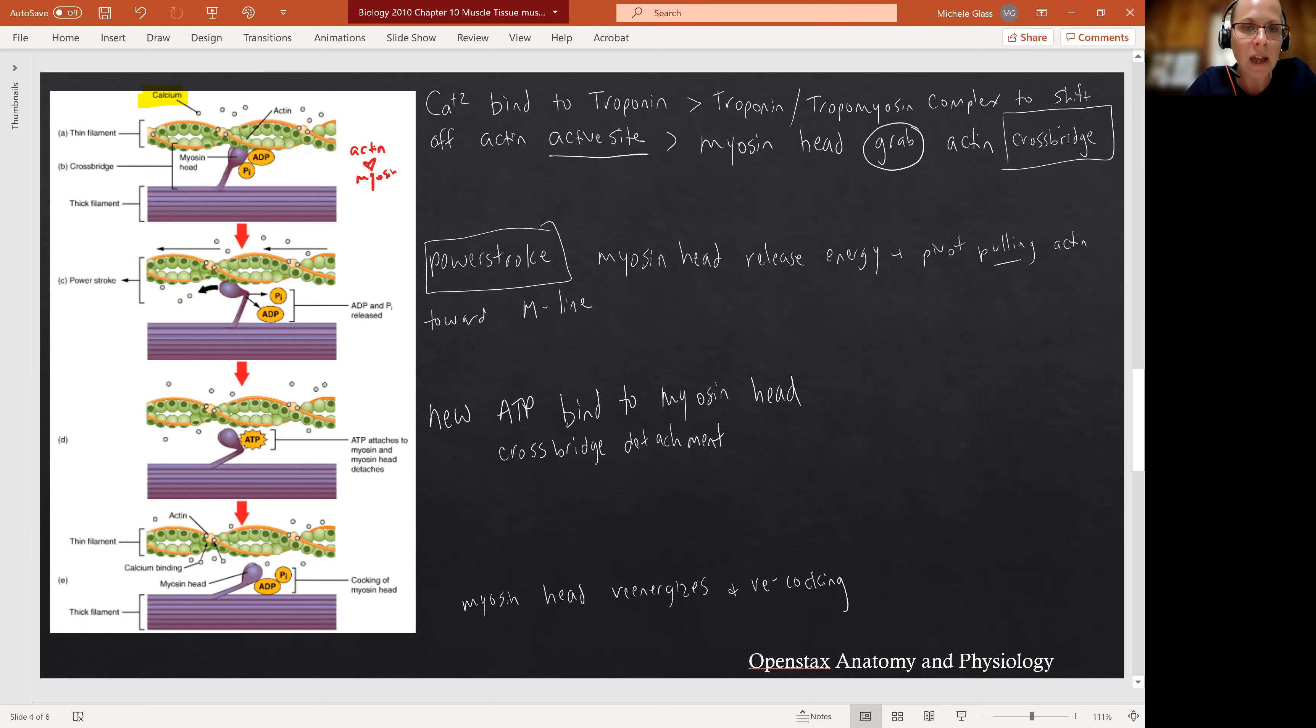Notice we still have calcium available. So we still have the troponin bound to calcium, which means that we still have the tropomyosin off of the active site. So what this means is as long as those active sites are available, that myosin is going to reach up, grab, do a new cross-bridge, do another power stroke and a detachment. And so if we get continual cross-bridge cycling, that's when we really start to have enough tension built in the whole muscle to really be producing movement.